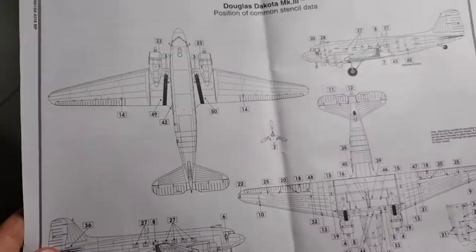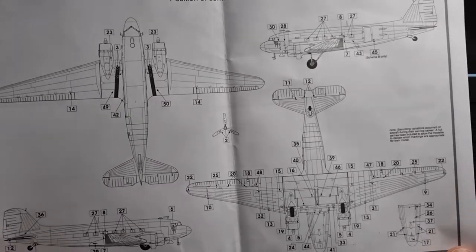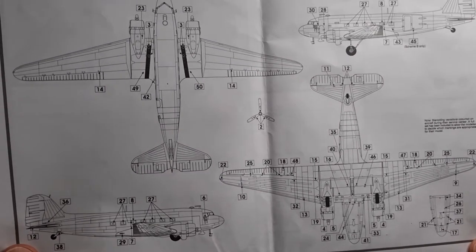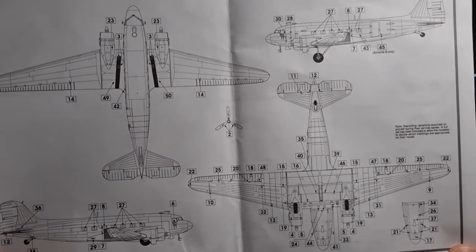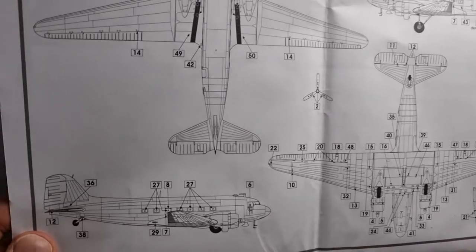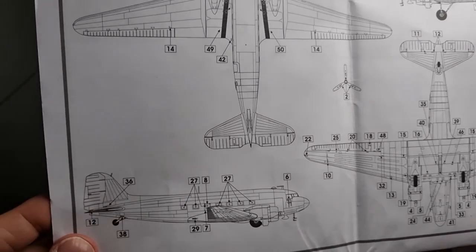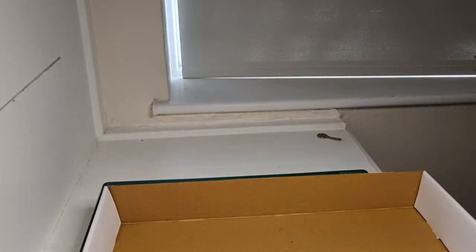Once you've painted it, primed it, and decaled it, there's the fitment of where all the stencils go - I think there's up to about 40 stencils on this kit, so that will keep you busy.